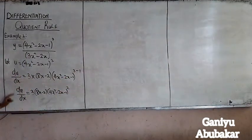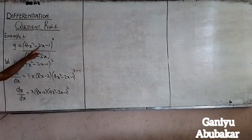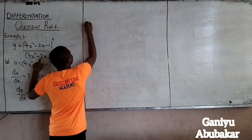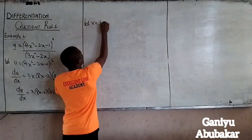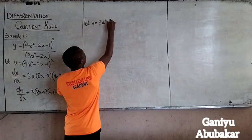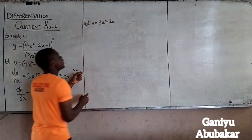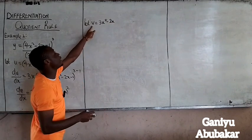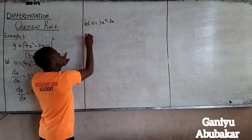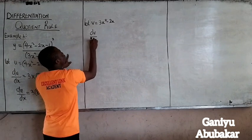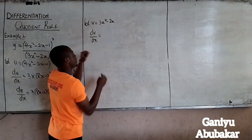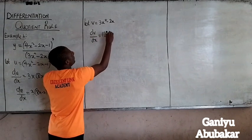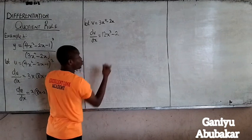This is my du/dx. Now let v be equal to 3x to power 4 minus 2x. If I differentiate this, I will have dv/dx equal to 12x to power 3 minus 2.